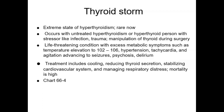Symptoms of thyroid storm are caused by excessive thyroid hormone release, which dramatically increases metabolic rate. Key symptoms include fever, tachycardia, and systolic hypertension. The patient may also have abdominal pain, nausea, vomiting, and diarrhea. The patient is very anxious and has tremors. As the crisis progresses, the patient may become restless, confused, or psychotic, and may have seizures leading to coma. Even with treatment, thyroid storm may lead to death.